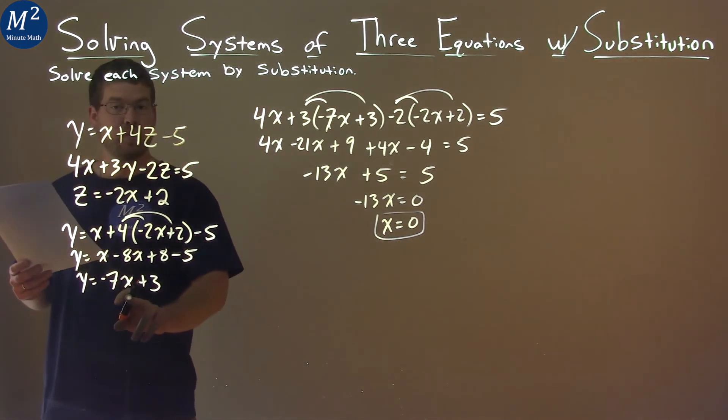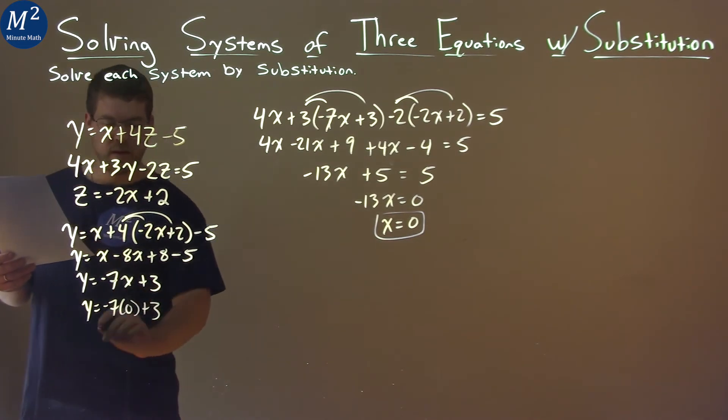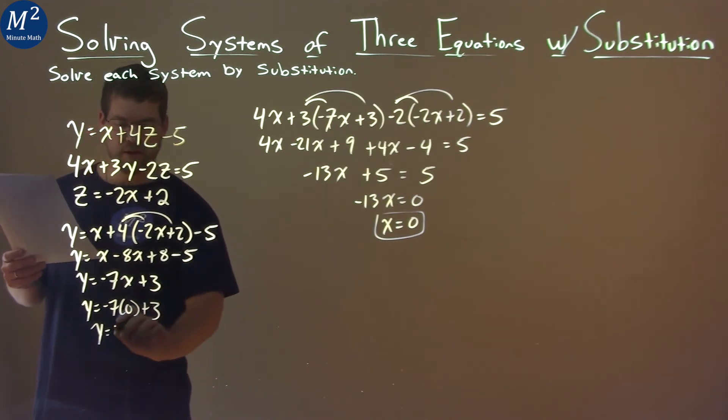We take this x = 0, we put in for this x here to get y by itself. So y = -7 times 0 + 3. And then y equals, well, -7 times 0 is 0, and we just have a 3 left over. And so y = 3.